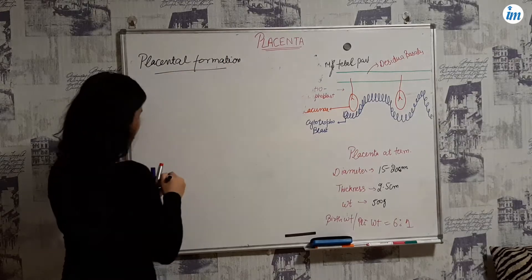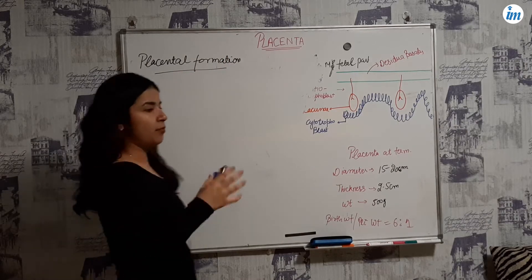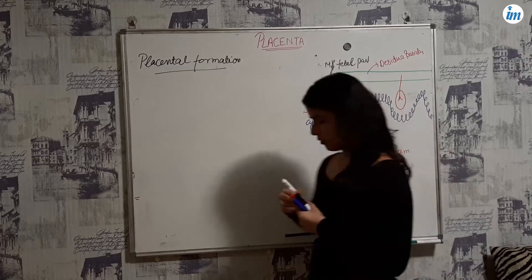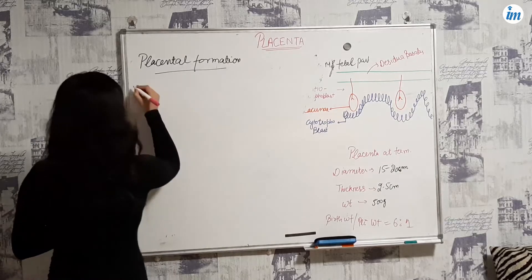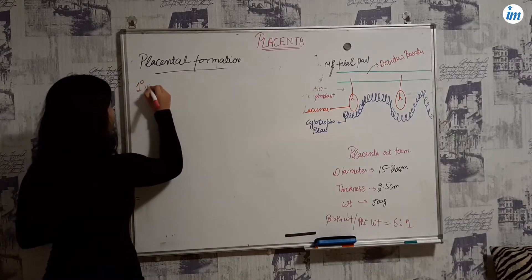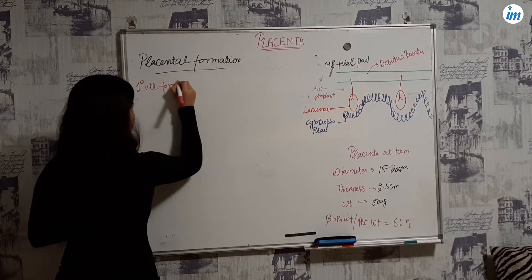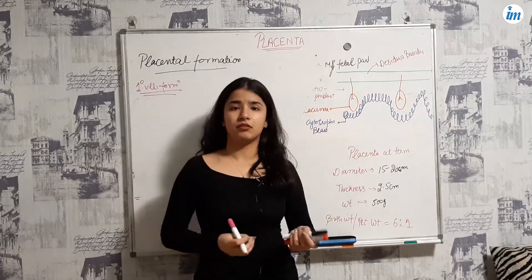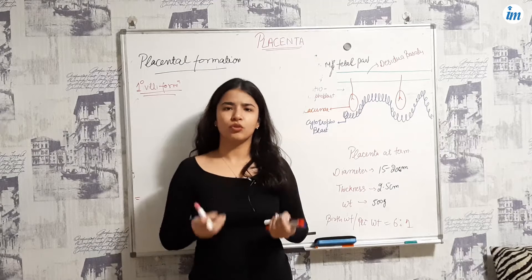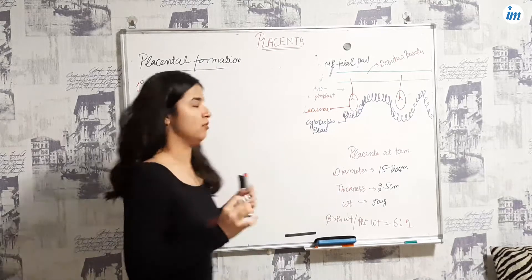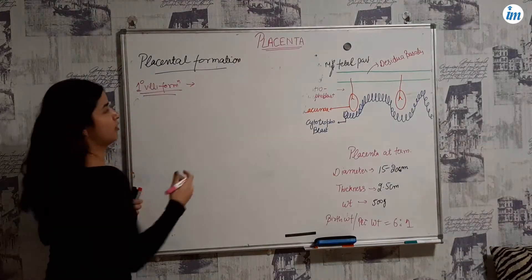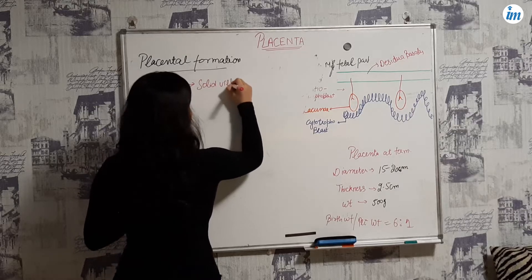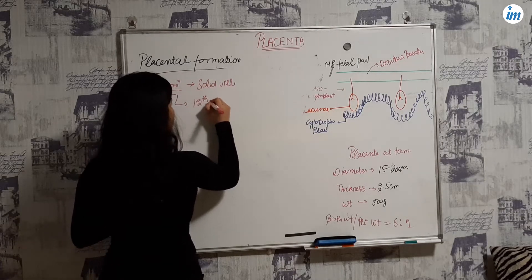Placental formation occurs through primary, secondary, and tertiary villus formation. Primary villus forms at day 12 and is also known as solid villi.